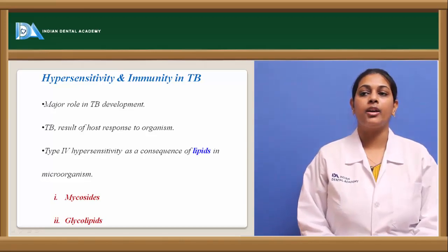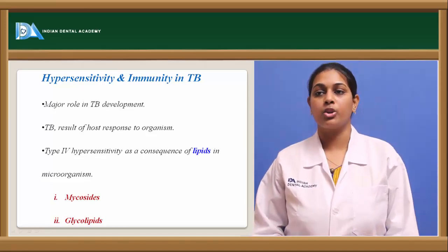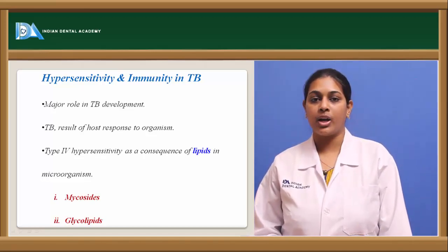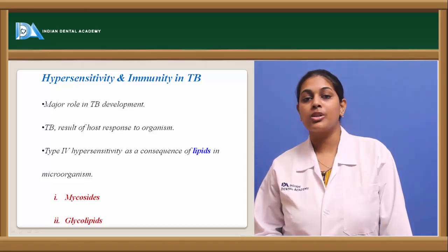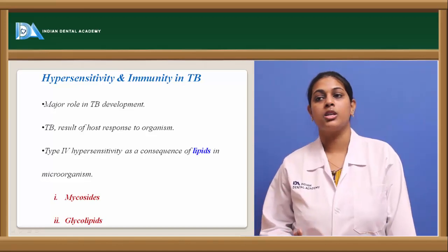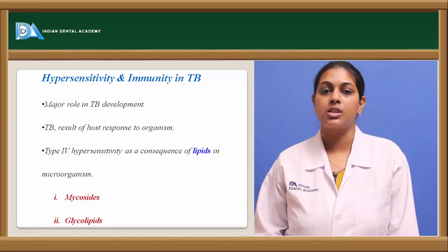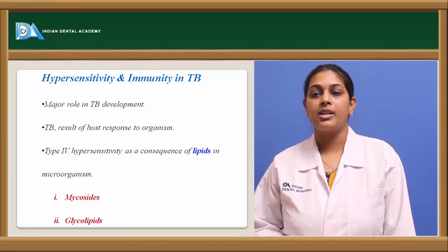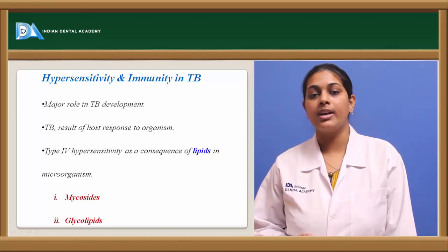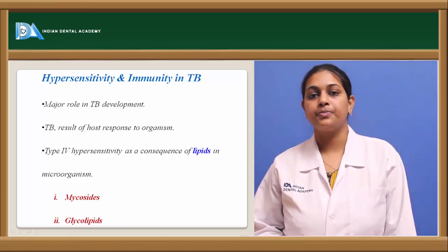Coming to immunity and the host defense system in tuberculosis, which plays a major role in tuberculosis development: hypersensitivity in tuberculosis is a Type 4 hypersensitivity, which is a delayed hypersensitivity. Since tuberculosis is largely based on the host response to organisms, it is important to know how this delayed hypersensitivity works.